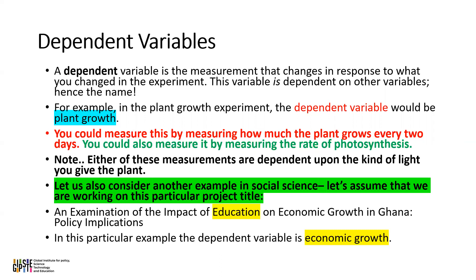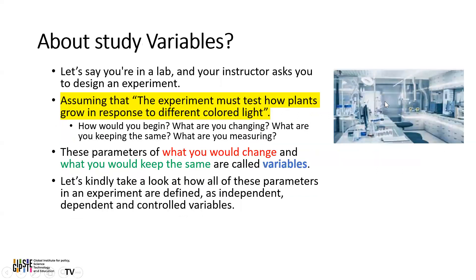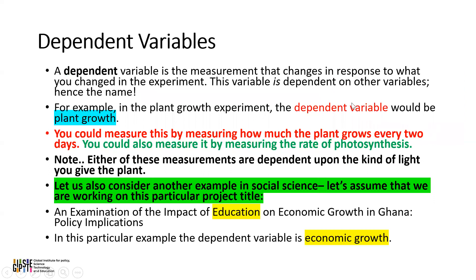For example, in the plant growth experiment, the dependent variable will be plant growth. You could measure this by measuring how much the plant grows every two days, or by measuring the rate of photosynthesis. In either way, all of these measurements are dependent upon the kind of light you give to the plant.